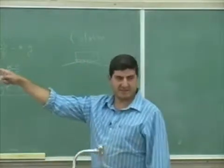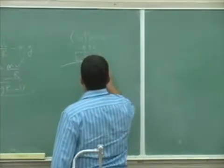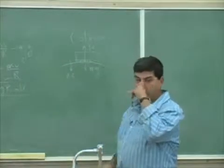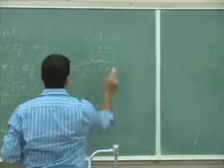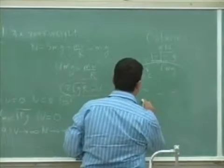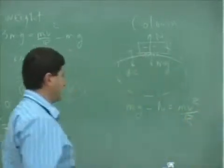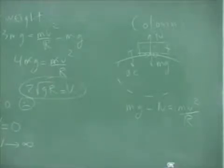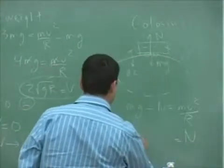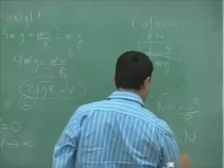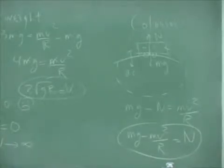This one is the reverse of that. The normal force is up, mg is down, and your acceleration is down. Because you're going up like this and the circle you're making is below you, you're accelerating towards the center. So now you have mg minus n equals mv squared over r. And this time, n equals...